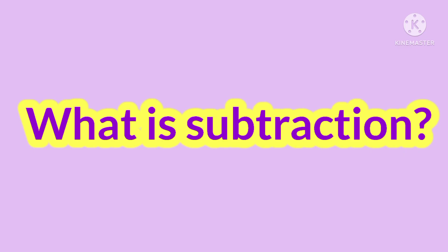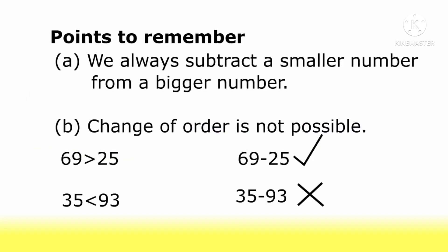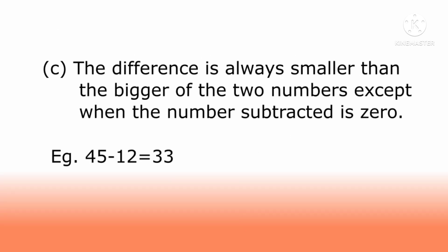What is subtraction? Subtraction means taking away a number or a quantity from a given number or a quantity. The answer in subtraction is called the difference. We always subtract a smaller number from a bigger number. Change of order is not possible. The difference is always smaller than the bigger of the two numbers, except when the number subtracted is zero.